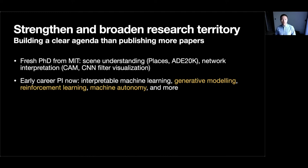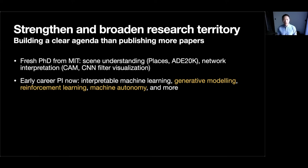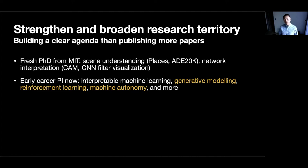But right now I am a principal investigator, which means I need to define my own research agenda. I would like to go beyond my previous research work. Previously I worked on computer vision, scene understanding, and network interpretation. But as a PI now, I've built many different topics under my research agenda, such as generative modeling, reinforcement learning, and machine autonomy — many interesting topics that interest me.